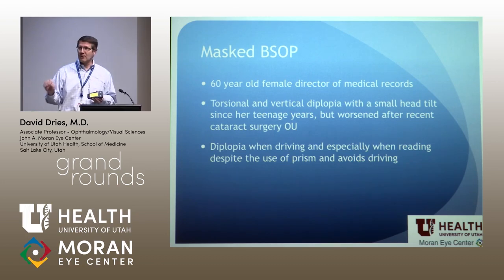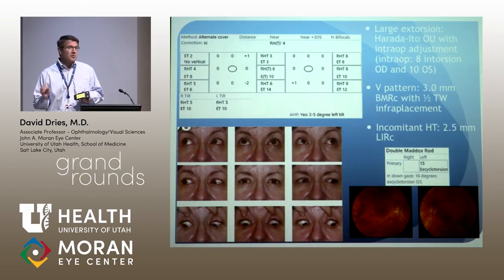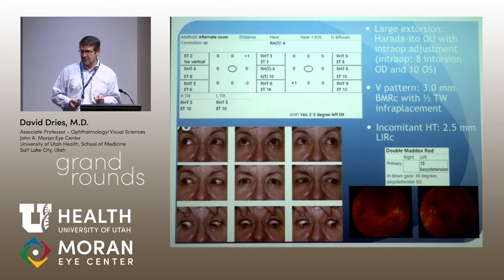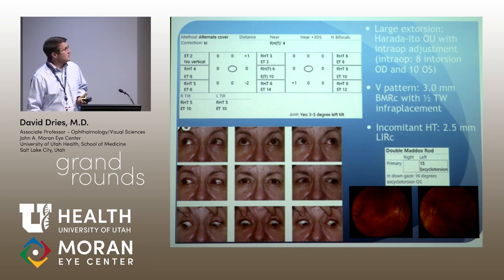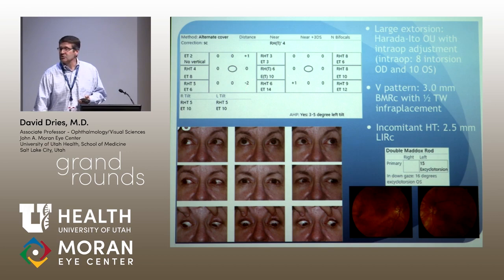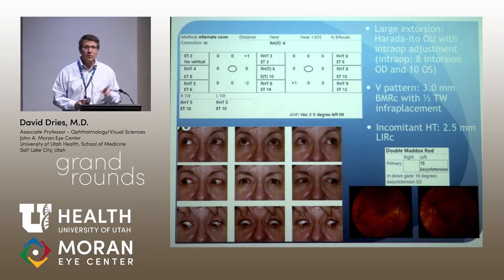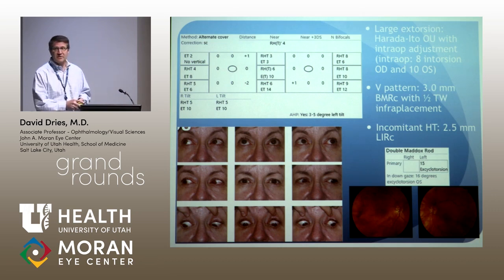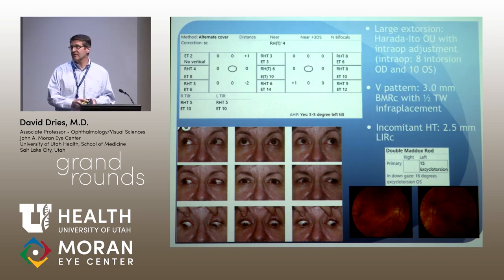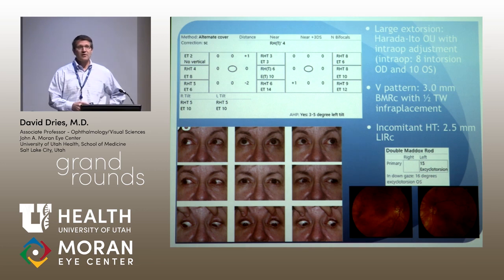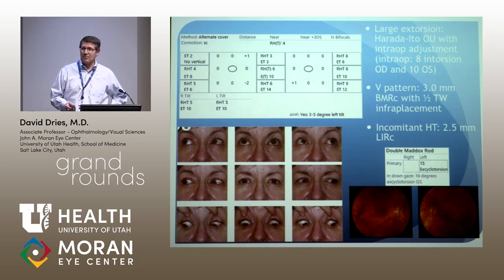Does she have a selective medial compartment superior oblique paresis? One can speculate, but we really don't have dynamic MRI to tell us this in these patients at this point. Let me talk about one more case — I think this is bilateral, and maybe even a bilateral medial compartment trochlear paresis. A 60-year-old female director of medical directors at the University of Utah. Torsional and vertical diplopia with a small head tilt going back to the teenage years, but it worsened recently after cataract surgery, which often happens with clarity of vision in patients with pre-existing strabismus. She had diplopia when driving and when reading. Her exam: 15 degrees of torsion in primary gaze, 16 degrees in down gaze — that is a lot of torsion. Again, a hypertropia that's not large without much incomitance, which argues that the posterior tendon fibers of the superior oblique and the lateral compartment are probably not as affected.